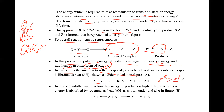The energy of the reactant is always higher than the energy of the product in exothermic reactions, so delta H is negative. In endothermic reactions, the energy of the products is greater than the energy of the reactants, so delta H is positive, meaning energy is being absorbed.